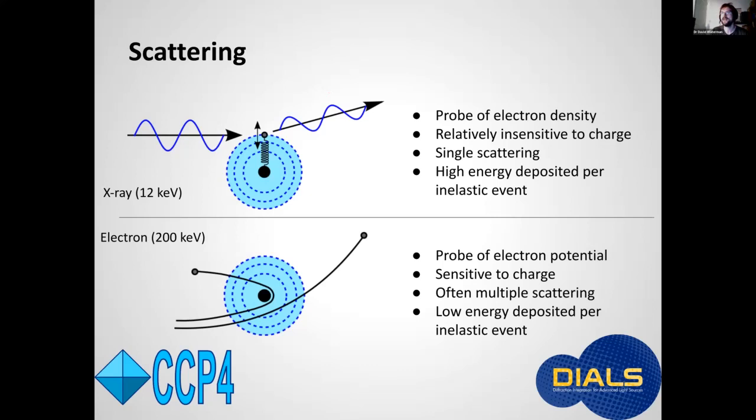So apologies to the purists and physicists in the audience. But whereas x-rays scatter from the electron clouds and therefore probe electron density, we can consider that electrons are scattering from the nucleus and probing the electrostatic potential of the crystal. The electron cloud in this case shields the nuclear potential and that means that scattering factors are highly dependent on the ionization state of the atom.